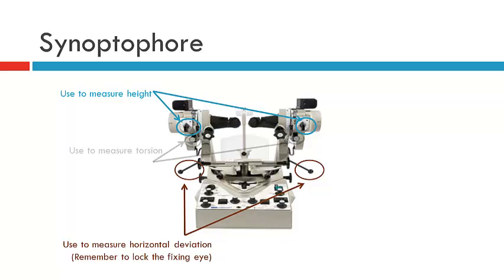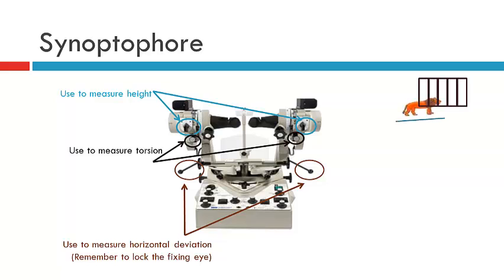Finally, you have the torsion lever to measure torsion. Ask the patient whether the line is tilted and then adjust the torsion lever until the line sits in alignment with the cage. When using the line-in-cage slides, you'll need to assess three components: horizontal deviation, vertical deviation, and torsion. Note that torsion is only assessed if you find a vertical element to the deviation.